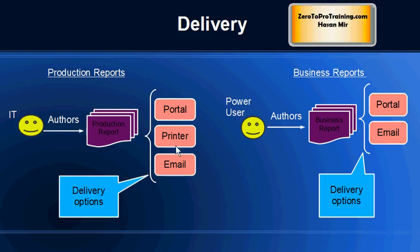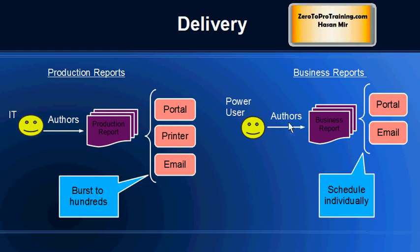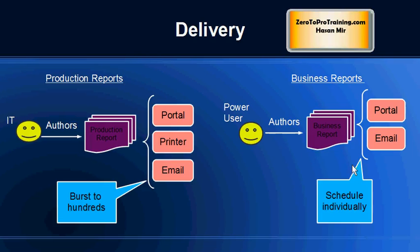Production reports are usually printed — hard copy is the norm — and sometimes copies must be stored for regulatory requirements for seven or ten years. Business reports are usually viewed and analyzed on screen, and may be emailed to an inbox; they are not typically printed. Production reports are usually burst to many users, while business reports are usually produced for an individual, so bursting is generally not in the picture. Keep in mind these are general trends and exceptions exist for each point.